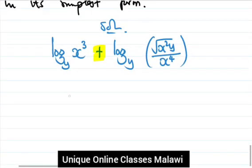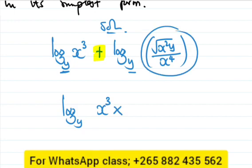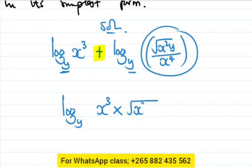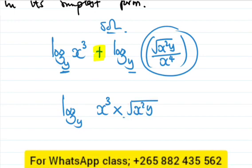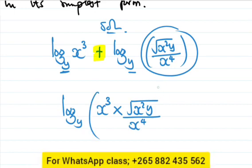This one can be written as log base y of x cube multiplied by radical x square y divided by x to the power four.